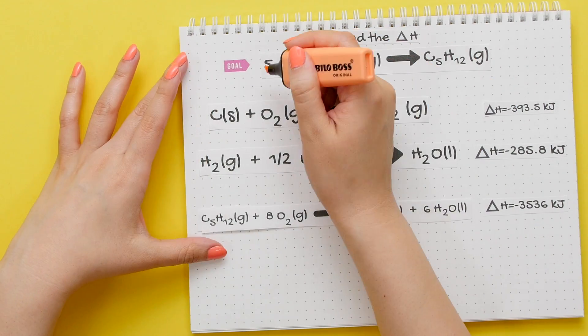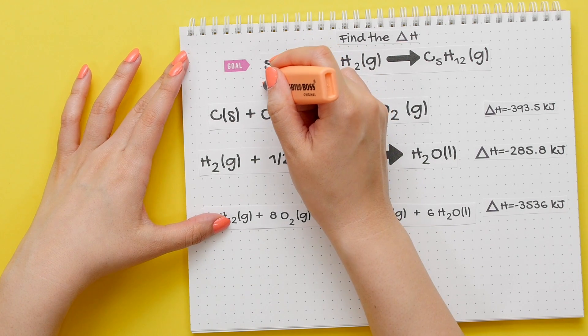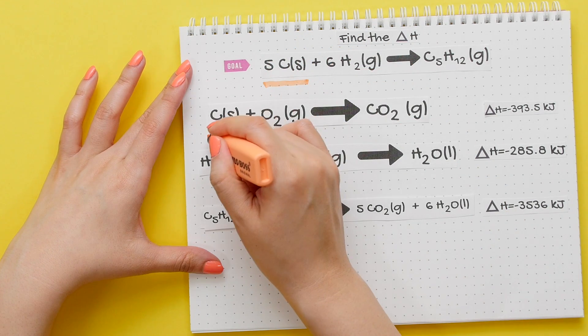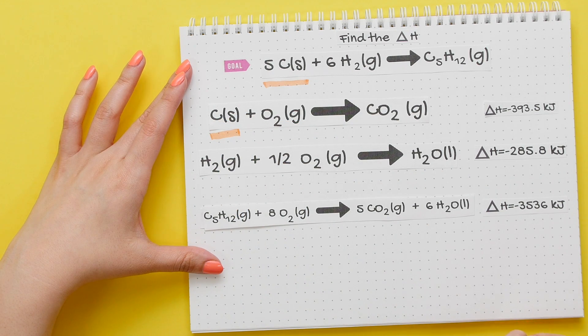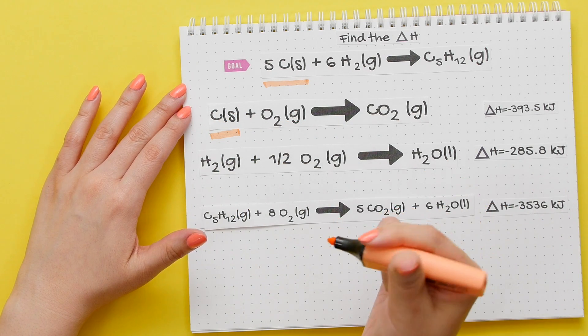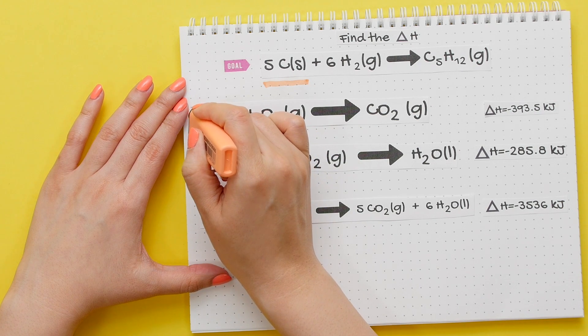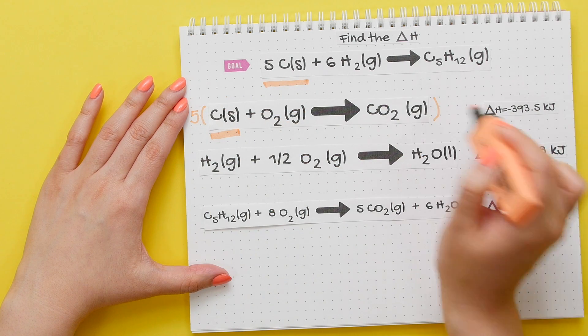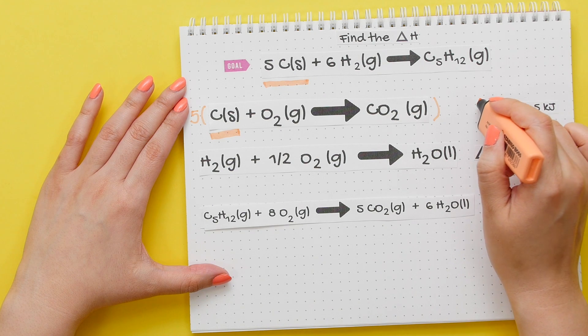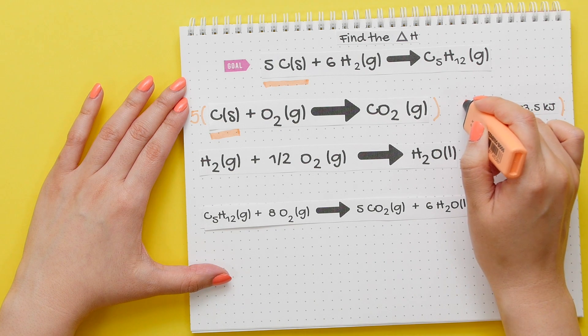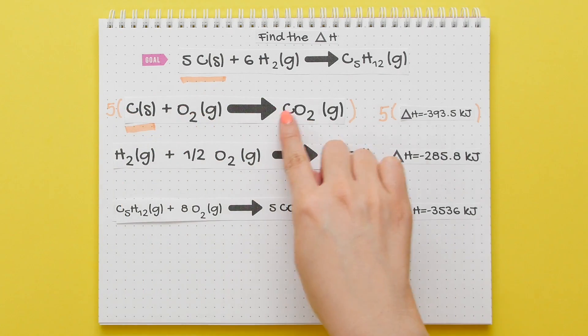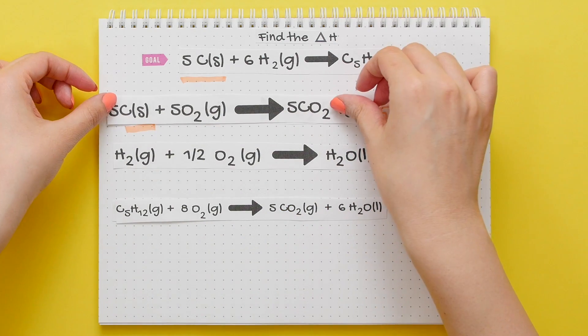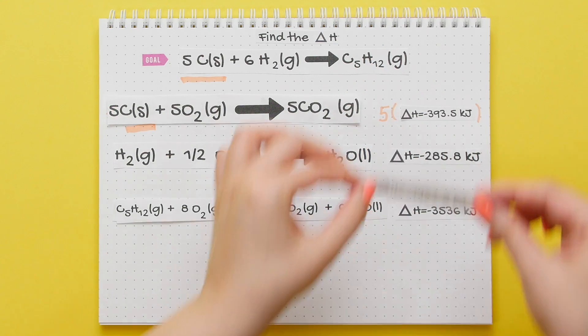Looking at our goal reaction, we will start with the first reactant of carbon, and we'll look and see where is carbon in the below reactions. Check if it's on the correct side, which it is, but we do not have the correct amount, which is five. Since we need five carbons, we must multiply the entire reaction by five, and we will multiply our enthalpy change by five as well. Whenever you multiply a reaction by a number, you must multiply your enthalpy change by that same number. Now distribute the five to everything, and we'll get this reaction. When we multiply five times the enthalpy change, this is our new value.